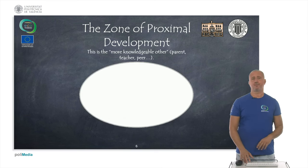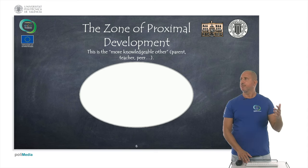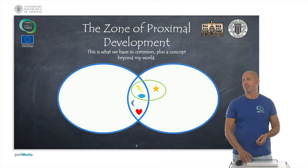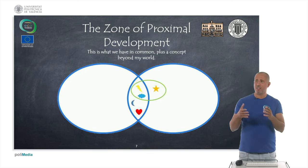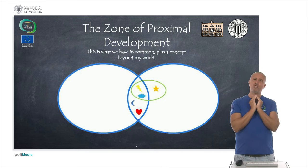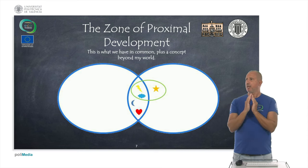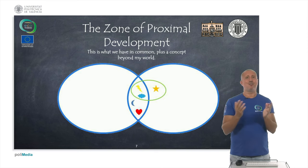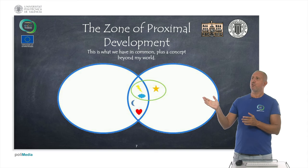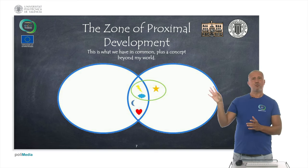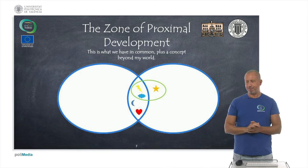This is the more knowledgeable other — a parent, a friend, a teacher, or a peer at school, which is the most interesting case for us. The Venn diagram shows that the middle part is the knowledge we share. In this case, it's a thunder, cloud, the moon, and love. But my more knowledgeable other knows about stars — and I don't. So the star is on the right Venn diagram and doesn't belong to my knowledge, only to his.